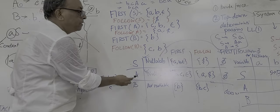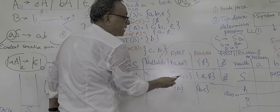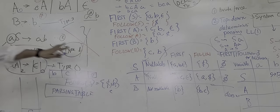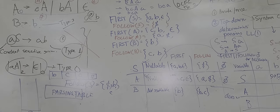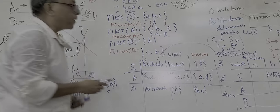But A is also nullable. First is B, C, epsilon. Follow of A is B. So this is B, C, epsilon. So this is an LL(1) grammar, and this is the perfect example of top-down parsing.